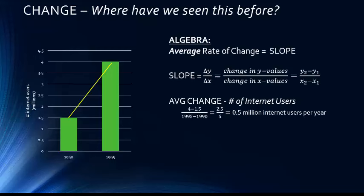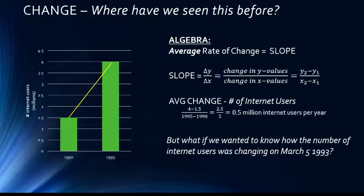We don't know if in 1991 there were a lot of users, or perhaps as we get to the end of this time frame, the user change was moving more quickly. But what if we did want to know the change in internet users on a specific date — for example, March 5, 1993, right in the middle of this range? Well, this is where the calculus comes in. In this lecture we're going to start building on how we get there conceptually using the idea of a limit.